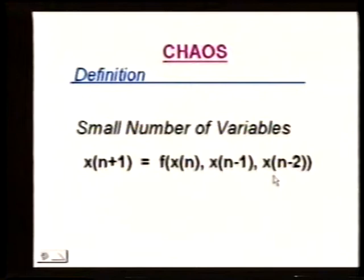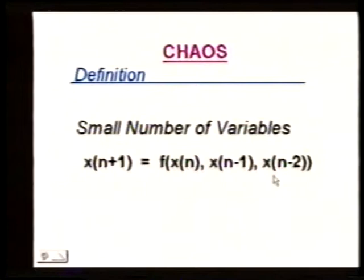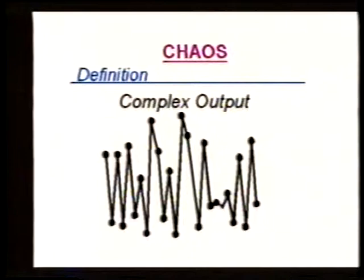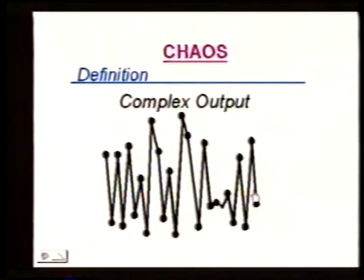The last part of the definition is that the output of the system is complicated. Even though it's deterministic and depends on a small number of variables, the output is very complex. Looking at this chaotic output, there would be no way to predict the next number — although, as we heard in Journal Club, apparently people can look at these things and predict the next number, which I still find surprising.